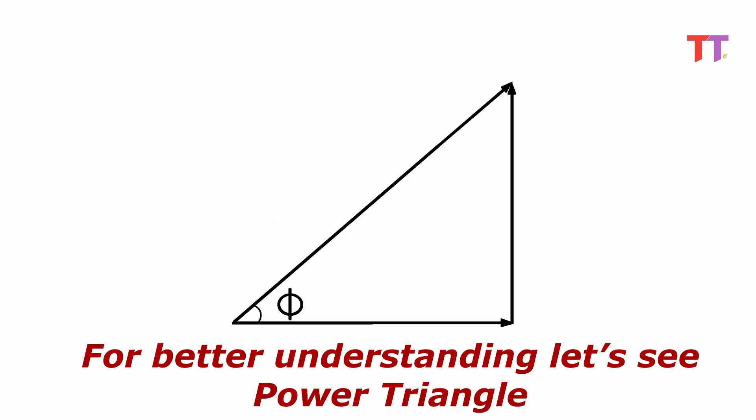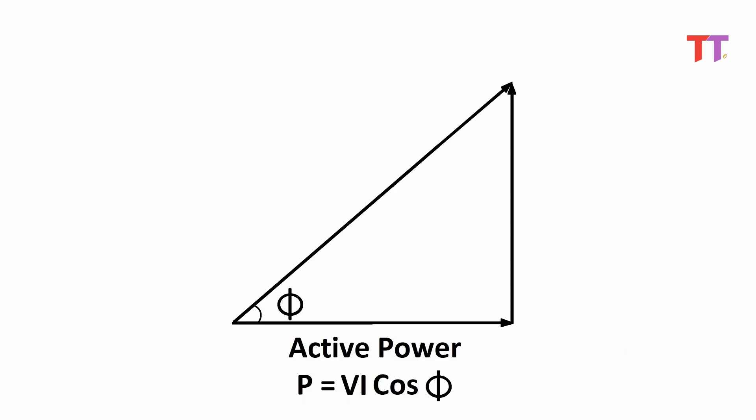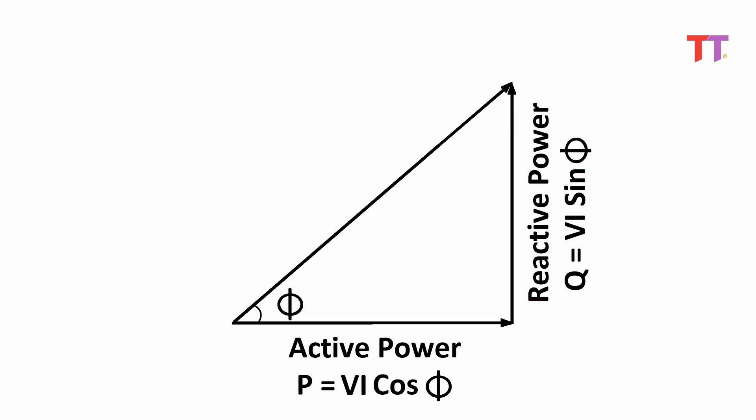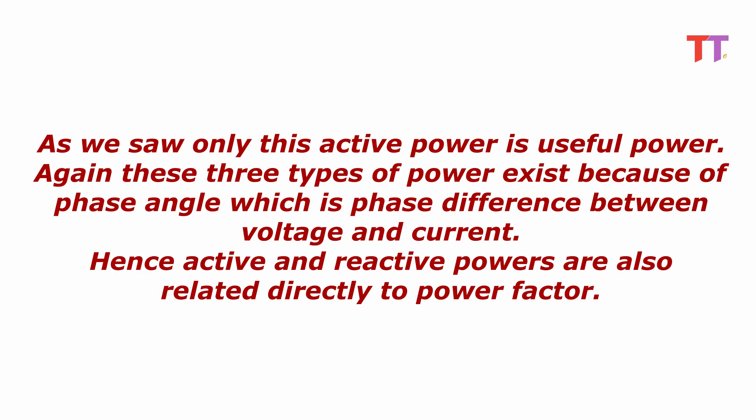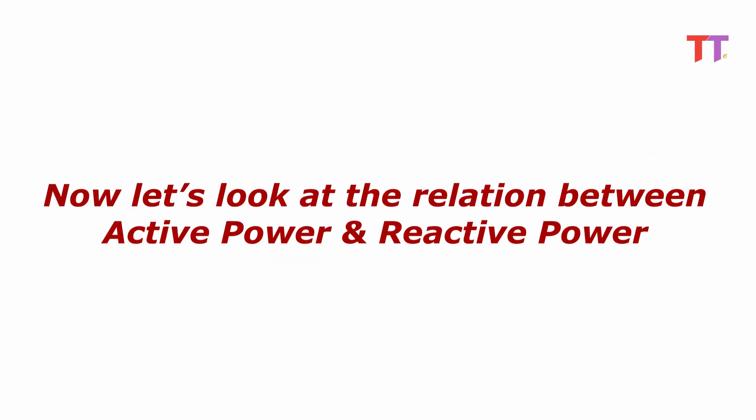For better understanding, let's see the power triangle. In this power triangle, active power is denoted as P, reactive power is denoted as Q, and the vector addition of active and reactive power is called apparent power, denoted as S. As we saw, only active power is useful power. These three types of power exist because of the phase angle — the phase difference between voltage and current — hence active and reactive powers are also directly related to power factor.